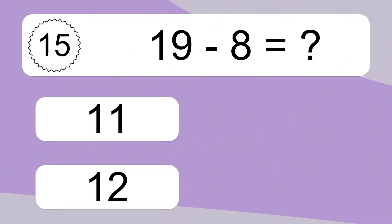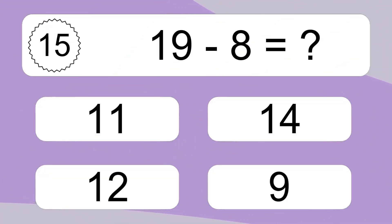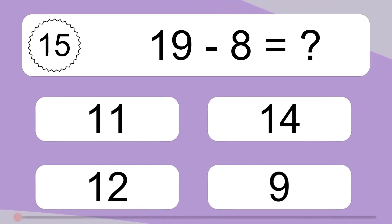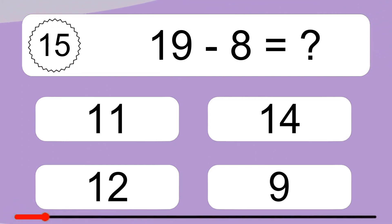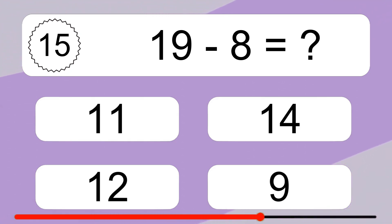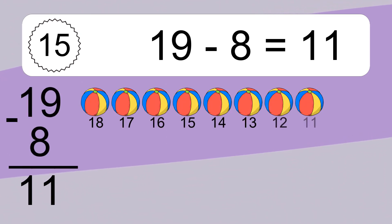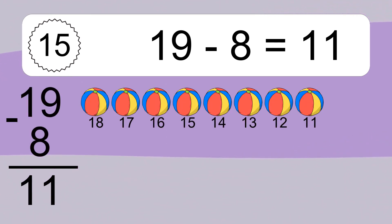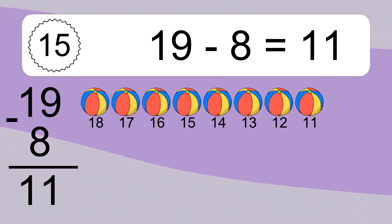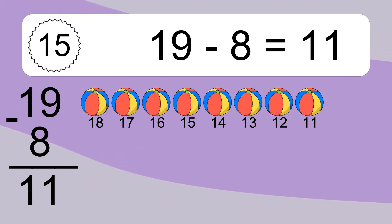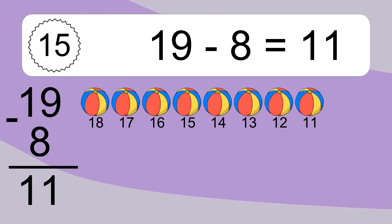19 minus 8 equals what? 19 minus 8 equals 11. Let's count it. 18, 17, 16, 15, 14, 13, 12, 11.